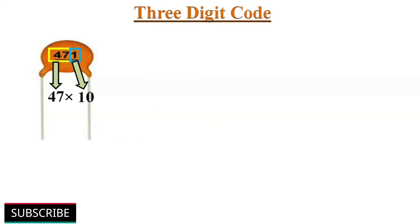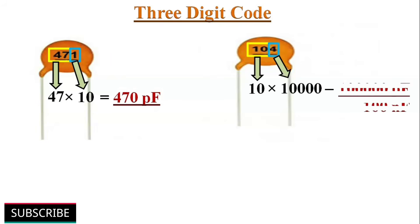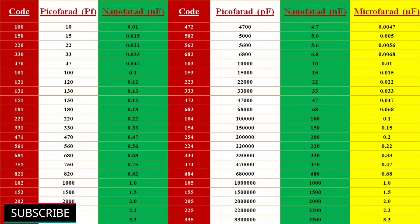The digits 471 indicate 470 picofarads. Likewise, the digits 104 indicate 10 multiplied by 10 to the power of 4, which gives 100 nanofarads of capacitance. This table shows the most commonly used ceramic capacitor codes and their unit conversions in picofarads, nanofarads, and microfarads. You can use this table as a reference.